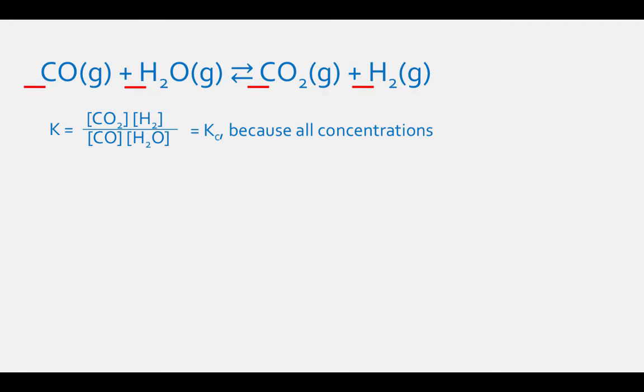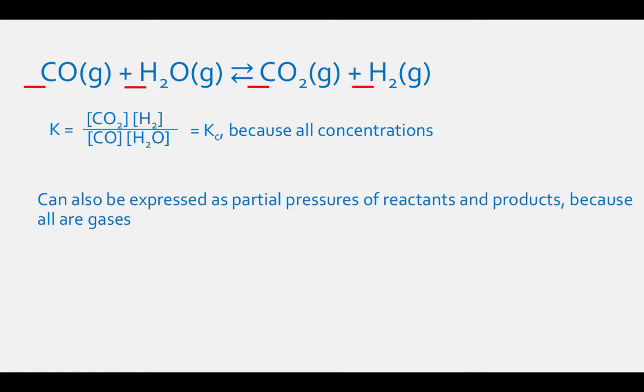This equilibrium constant is given a subscript of C because it is the concentration equilibrium constant, Kc. This equilibrium constant can also be represented by the partial pressures of the reactants and products because they are all gases. In this case, the equilibrium constant is given the subscript P, and Kp equals the partial pressure of CO2 times the partial pressure of H2, divided by the partial pressure of CO times the partial pressure of H2O.